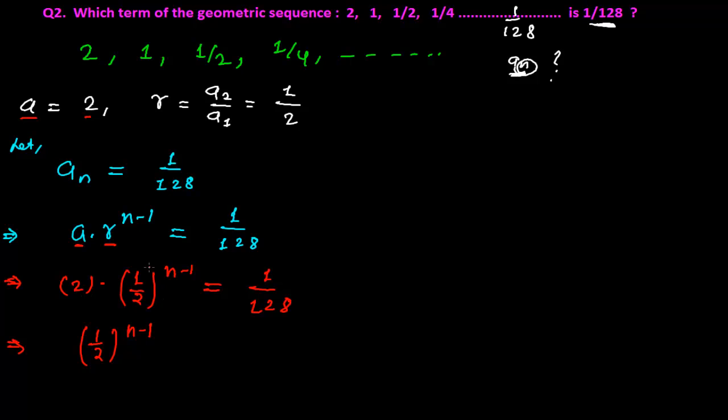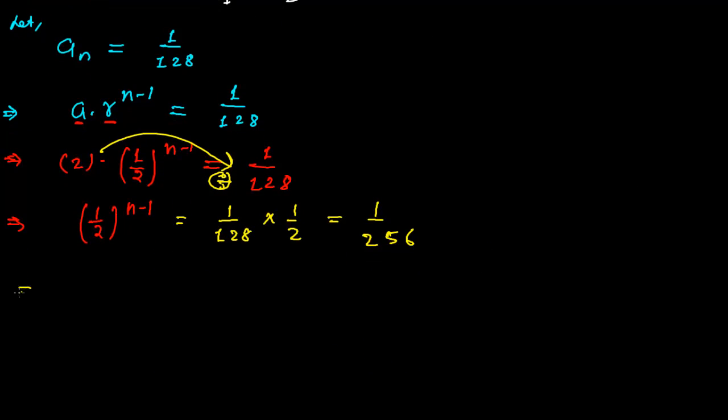So when this 2 goes to the other side, it will divide. So it will be 1/128 times 1/2. This 2 is multiplying here, it will be dividing, that is 1 over 128 times 2, which is 256. So finally what we get is (1/2)^(n-1) equals 1/256.